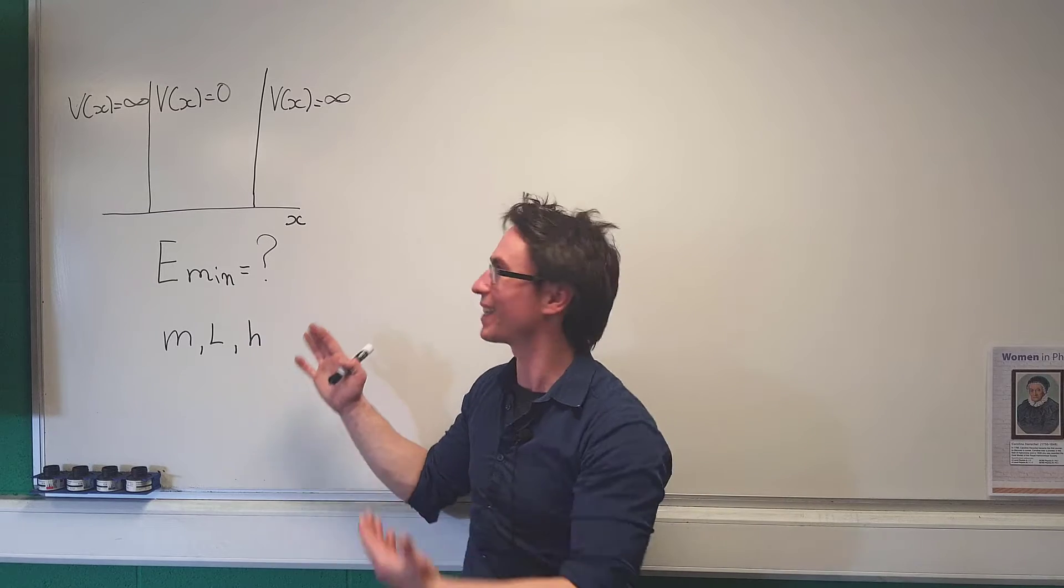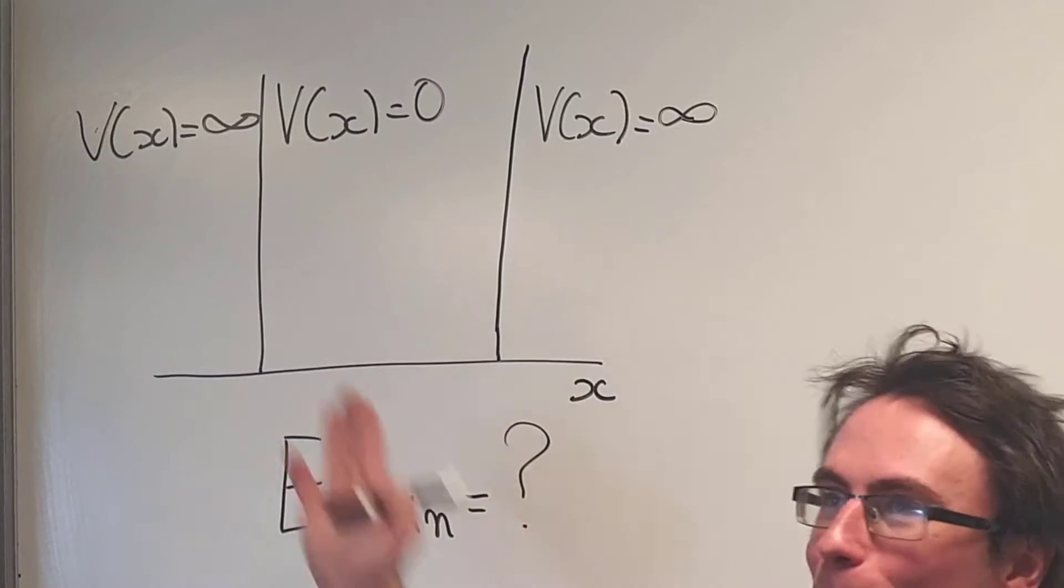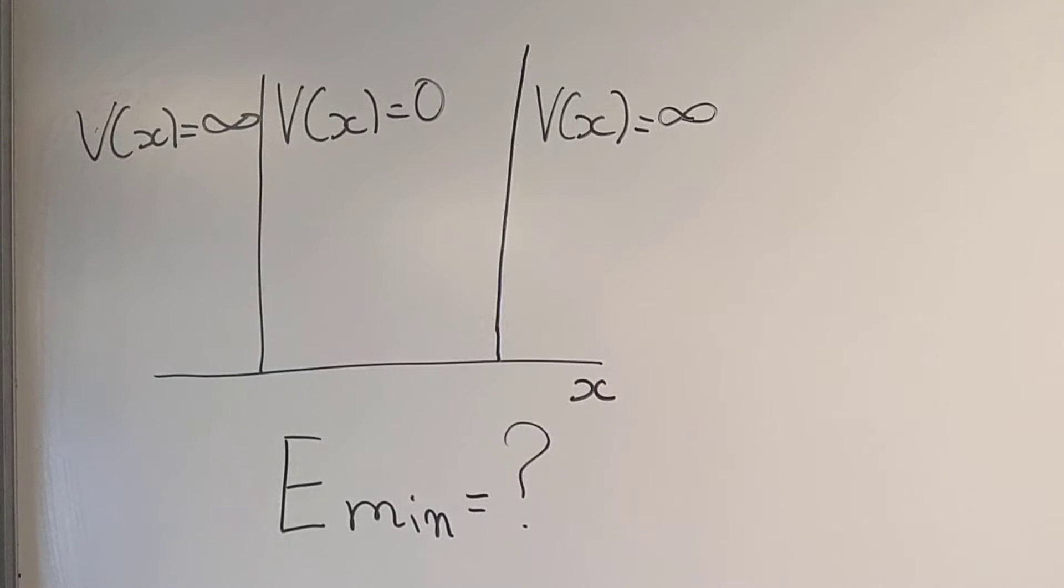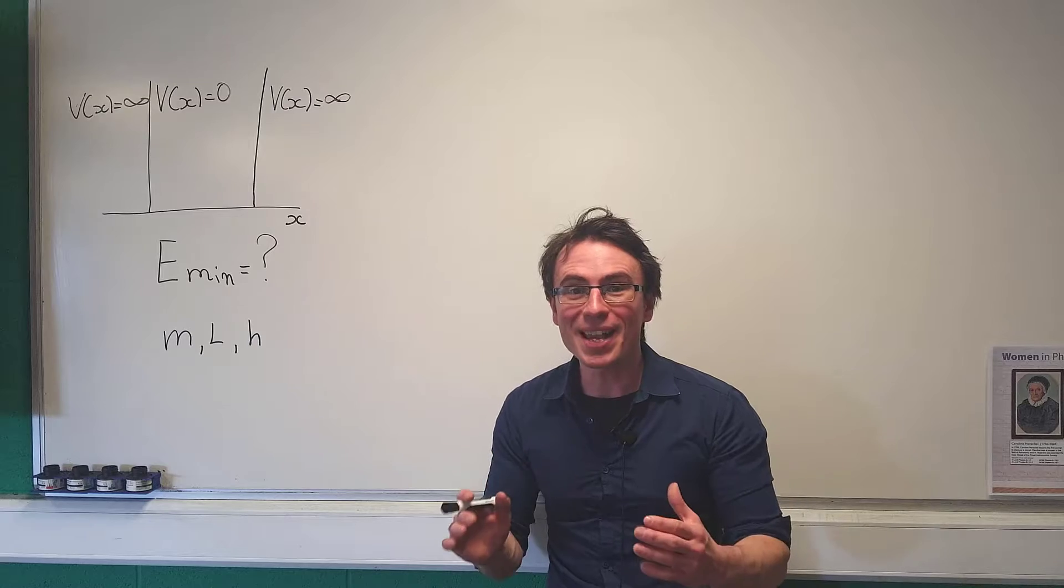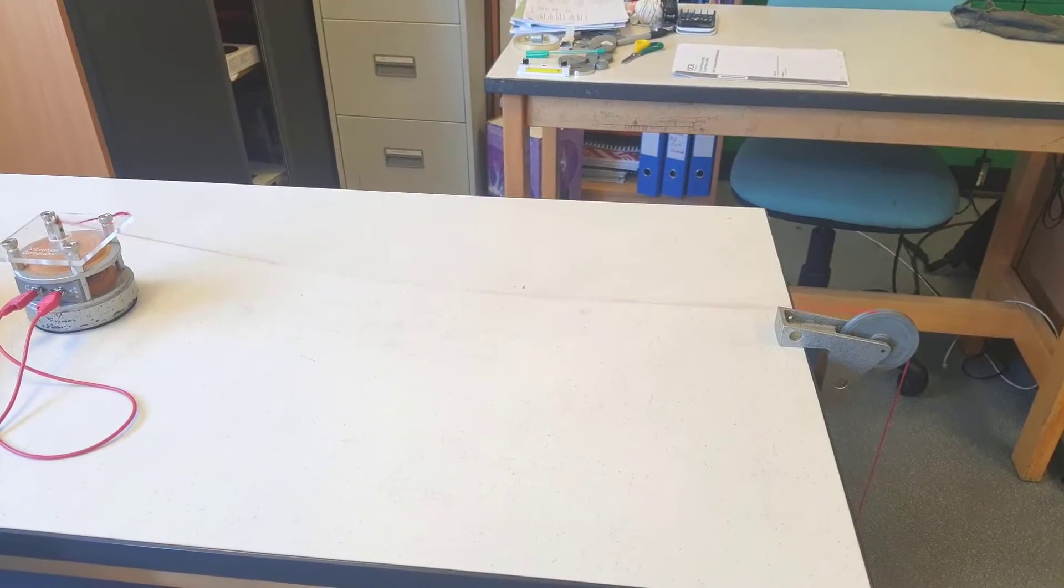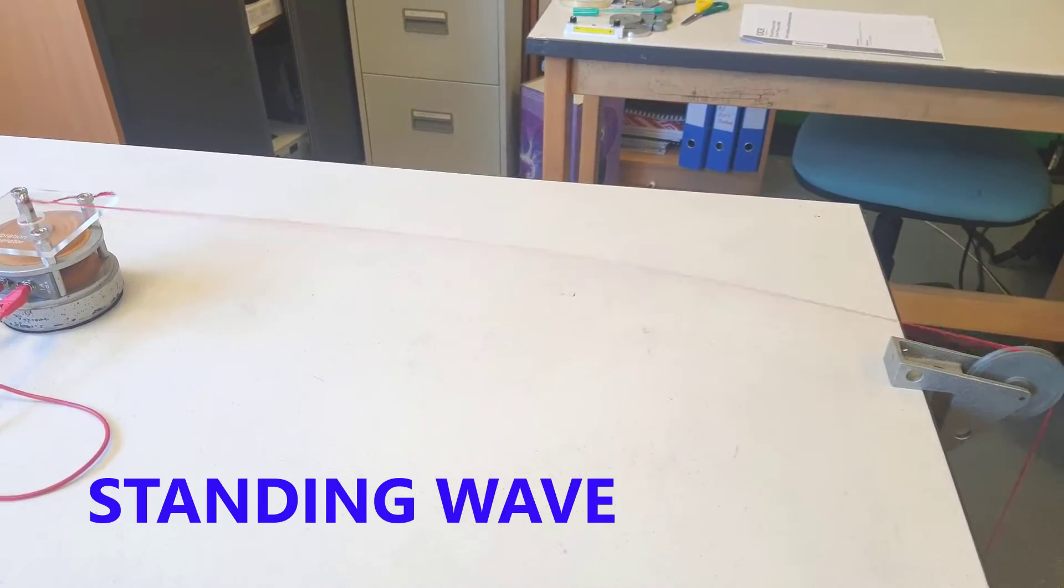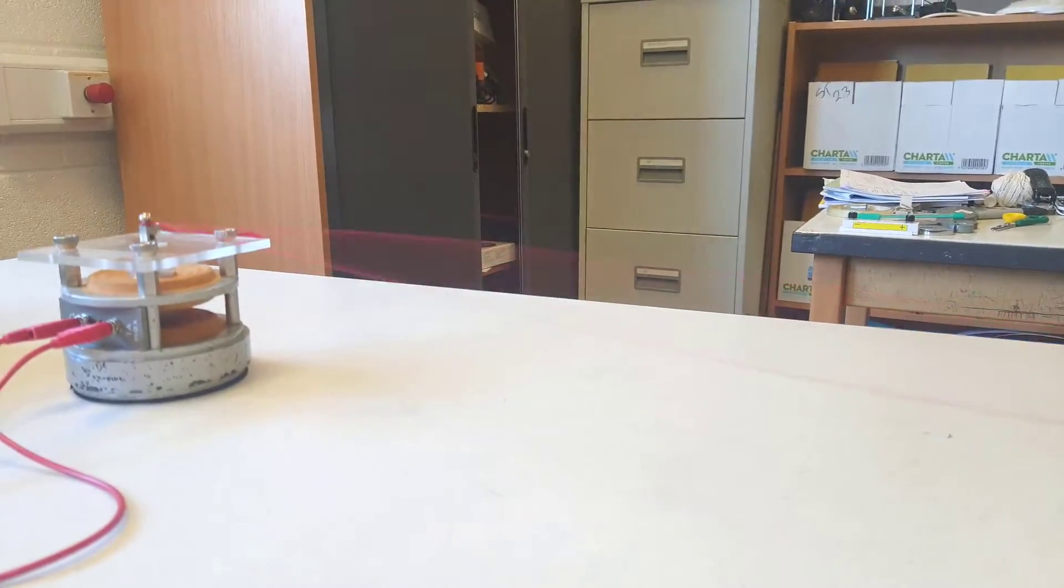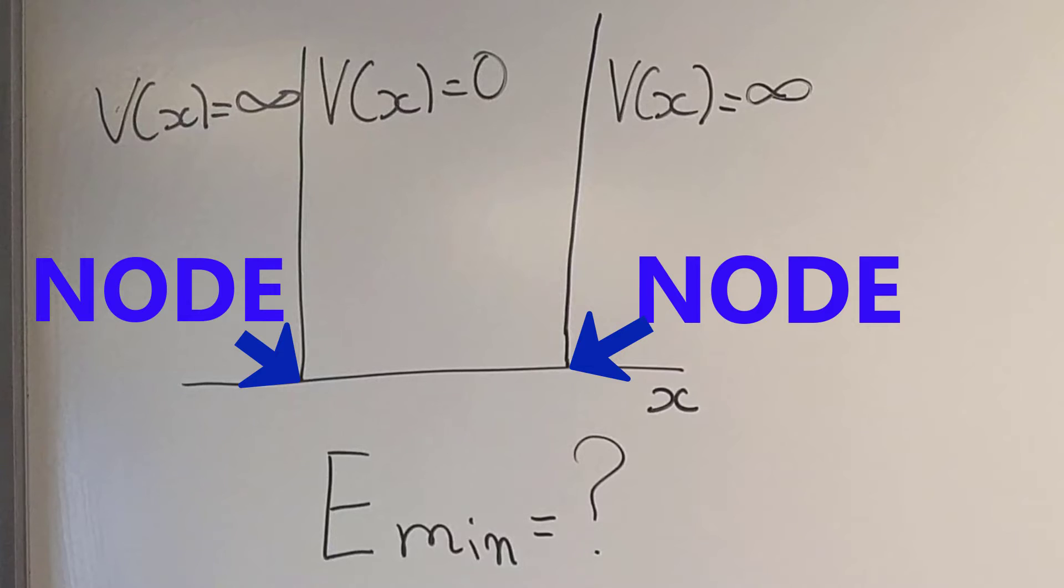We have this particle that is trapped in this one-dimensional box with infinite potential on either side of the box and zero potential on the inside. The amazing thing is that this particle can be described as a de Broglie standing wave, just like a mechanical wave that will have nodes on the edges of the box.